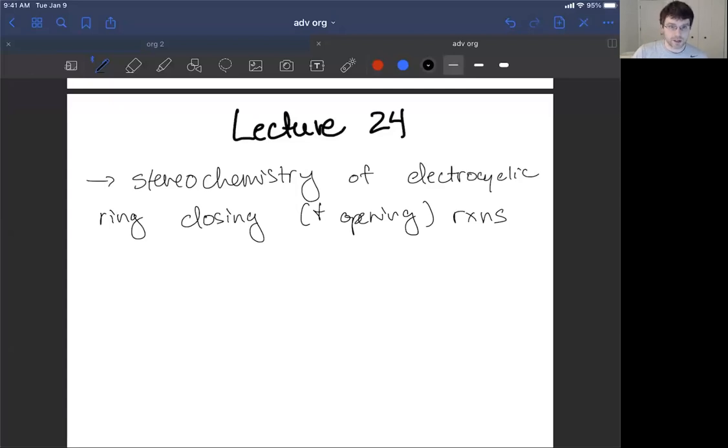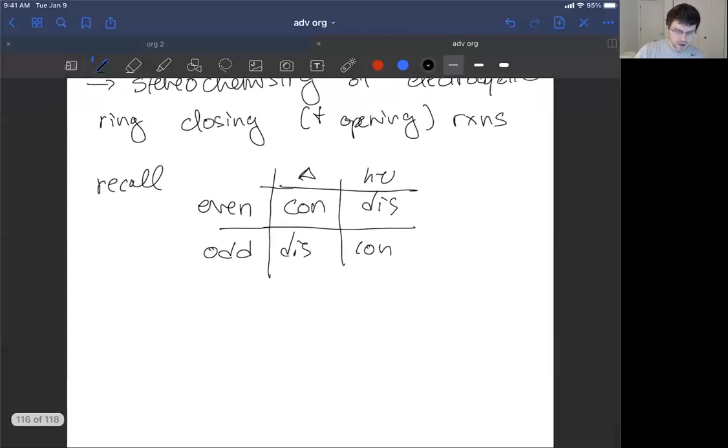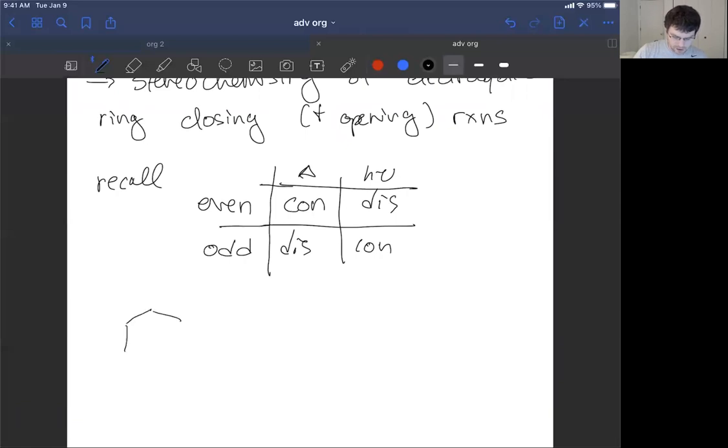This is where we needed to recall our table where we had con, dis, dis, con. And if we think about the labels for our table, it was even and odd, then delta and H nu or heat and light.